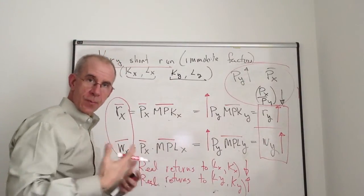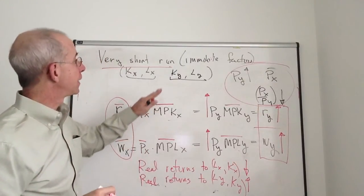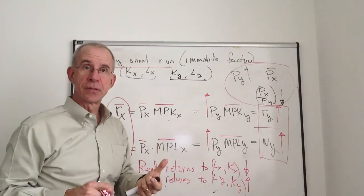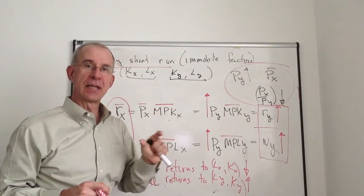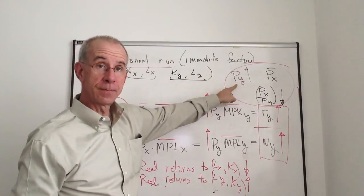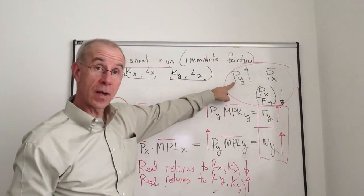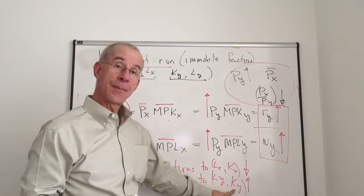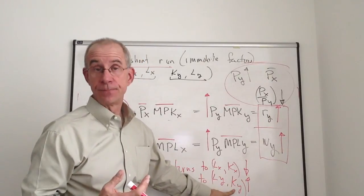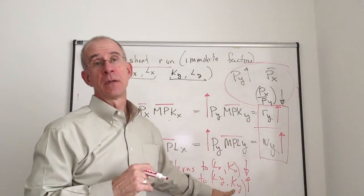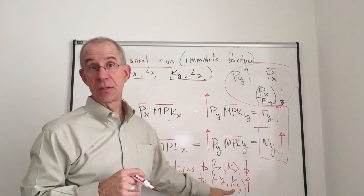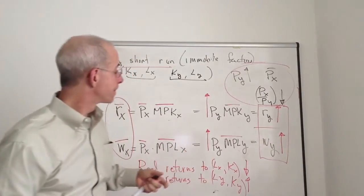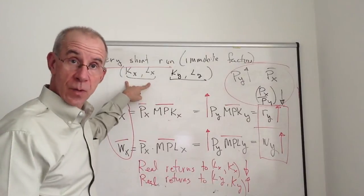So to really summarize and back up from this, what you have in the very short run immobile factors model is that your economic interests are intimately tied with the industry in which you're employed. The price of your good goes up - that is to say, if the price of Y goes up, the impact on workers and capital owners in good Y is good. They can buy more. They can stretch their income further because they have received higher returns relative to the cost of the goods that they make.